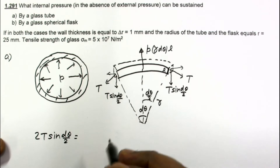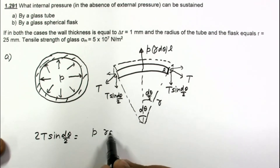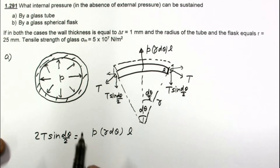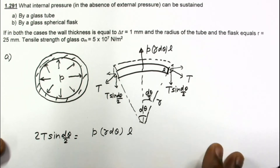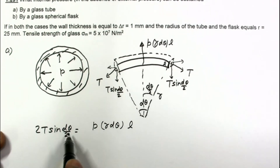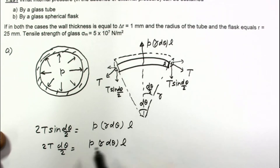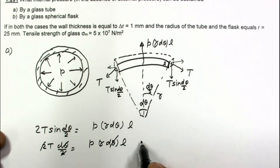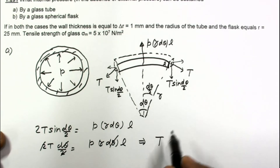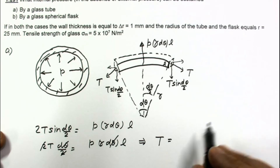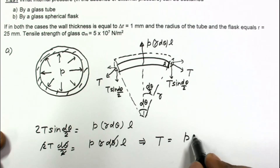Since we are taking a very small angle, sin(dθ/2) ≈ dθ/2. So the equation becomes 2T·(dθ/2) = p·r·dθ·l. The 2 cancels and dθ cancels, giving the tension at this cross-section as T = p·r·l.